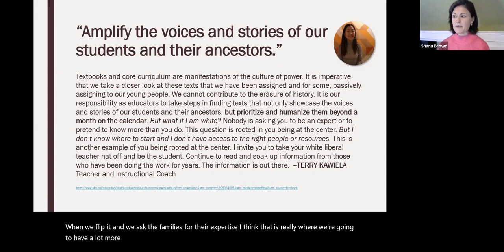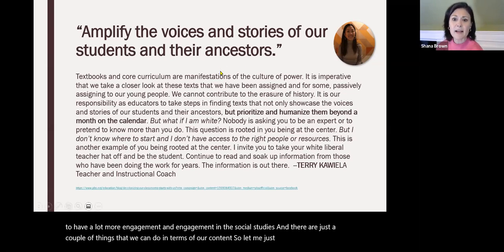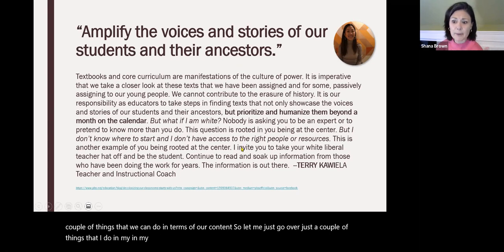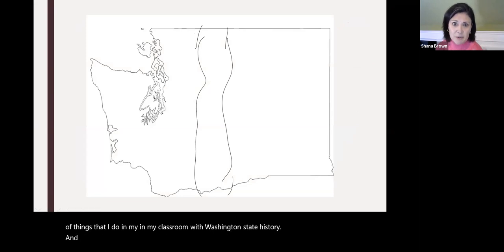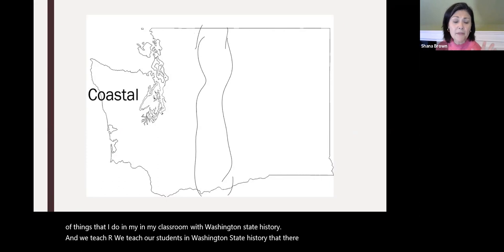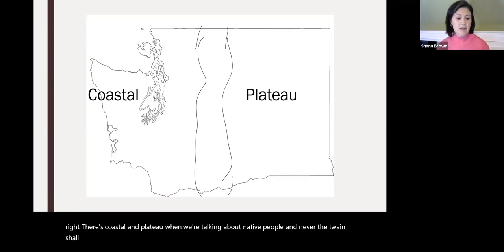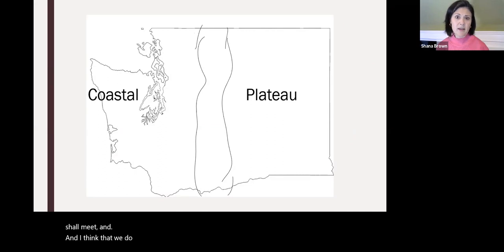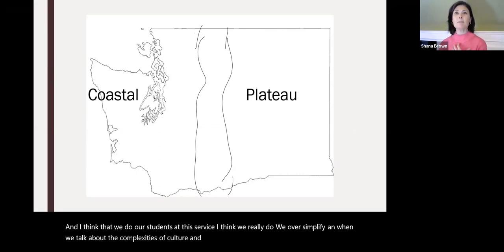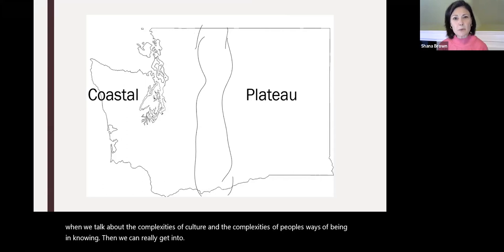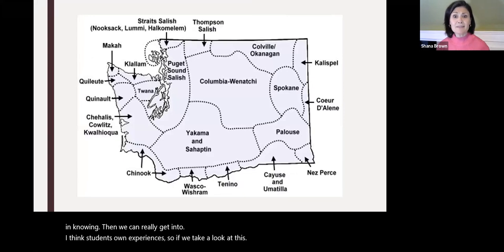Let me go over a couple of things I do in my classroom with Washington State history. We teach students that there are two regions — coastal and plateau — when talking about Native people, and never the twain shall meet. I think we do students a disservice. We oversimplify. When we talk about the complexities of culture and people's ways of being and knowing, we can really get into students' own experiences. Look at these cultural and geographic tribal regions in Washington State — they're really language-based.